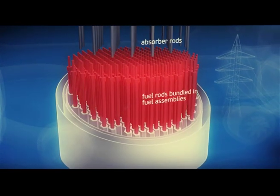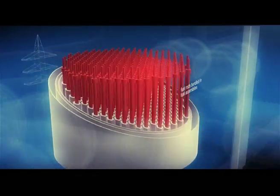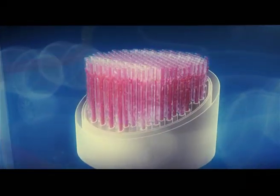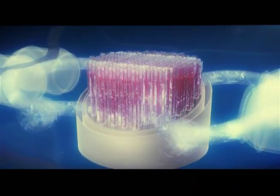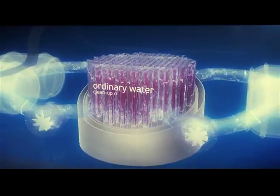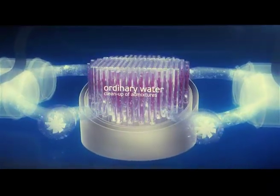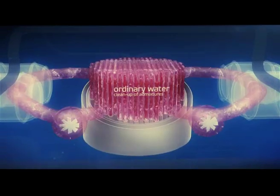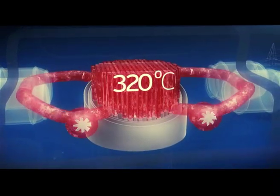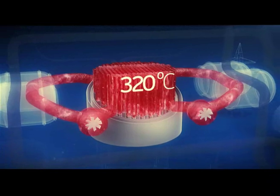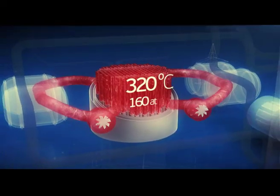Nuclear power plants with VVER reactors employ a two-loop arrangement. Ordinary water, cleaned from all admixtures, circulates through the reactor. When passing through the core and washing over the fuel rods, it is heated up to 320 degrees Celsius. To keep it in liquid state, it has to be under a pressure of 160 atmospheres.